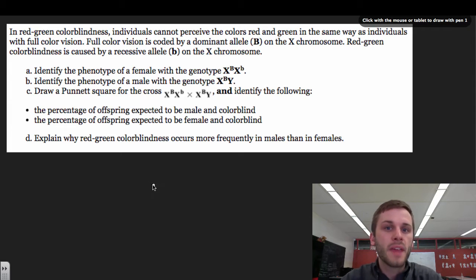Okay, this is the second MCAS practice problem we're going to try. And again, this has to do with genetics. And this one has to do with colorblind versus not being colorblind. So I think this is a pretty cool one because usually everyone knows someone who has been colorblind. So let's read the question.